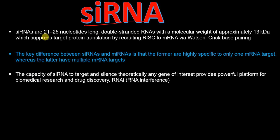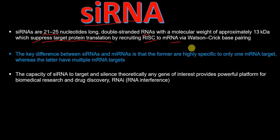SiRNAs are approximately 21 to 25 nucleotides long, double-stranded non-coding RNAs with a molecular weight of approximately 13 kD, which suppress target protein translation by recruiting the RISC complex to mRNA via Watson and Crick base pairing. This is called the RNA-induced silencing complex, which I will discuss in detail in the later part of this video.